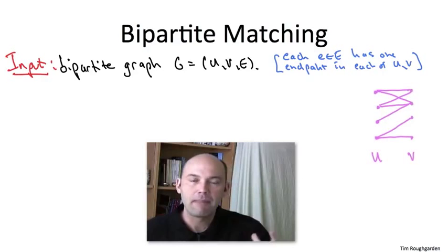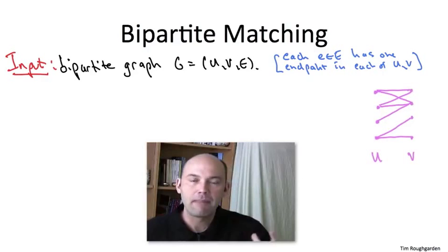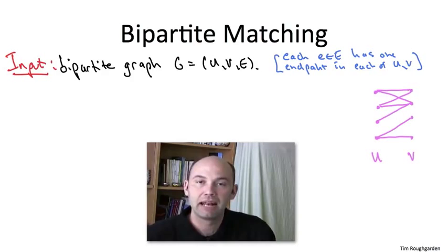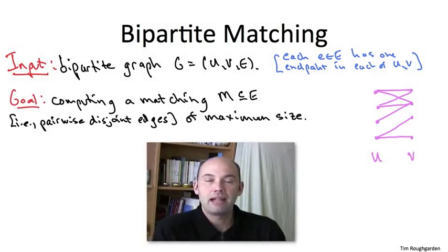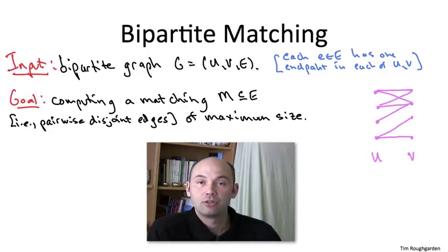The goal is to compute a matching. Remember, a matching is a subset of edges that are pairwise disjoint - no pair of edges can overlap in an endpoint - and to compute the matching that has the largest possible size. For example, in this pink graph on the right, there are various matchings consisting of three edges, and I'll leave it for you to check that there is no perfect matching. There's no way to have a matching of four edges.